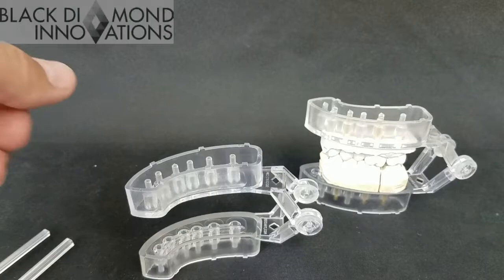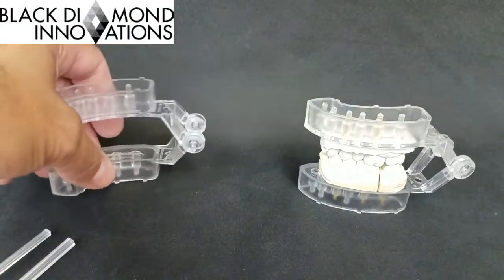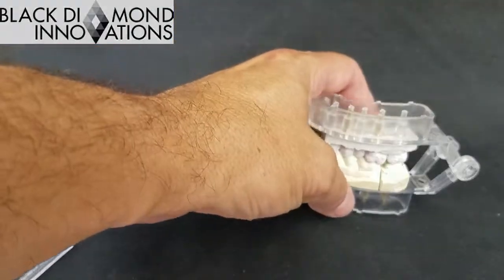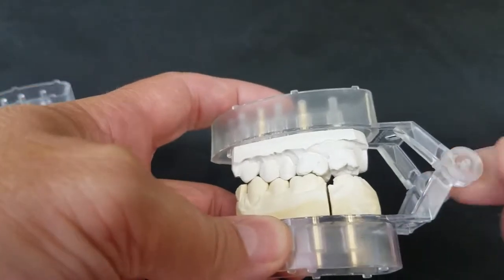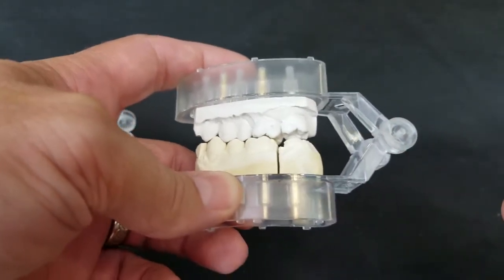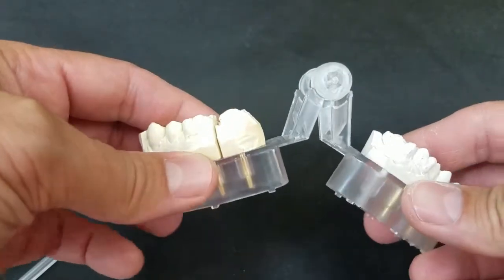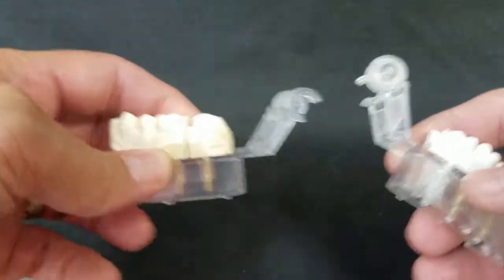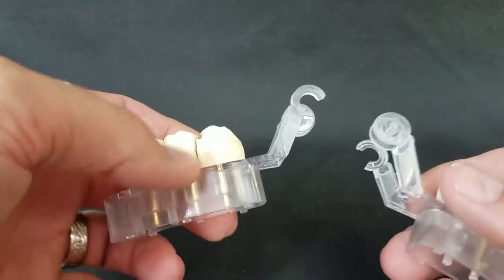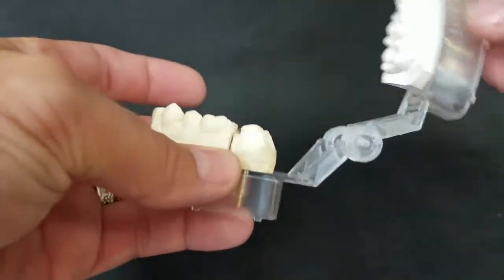These are the Diamond Articulators by Black Diamond. I'm going to go over some of the features. One of the key features is this sturdy, durable hinge. When you flip it open all the way, it'll dearticulate itself, so you're not pulling open and busting these hinges because it forces itself apart automatically.